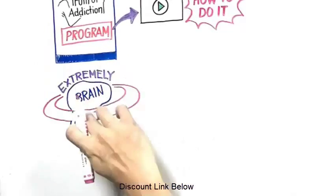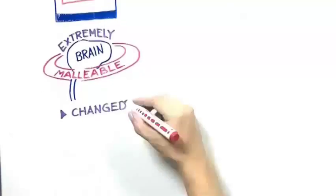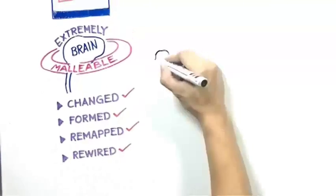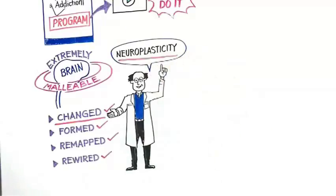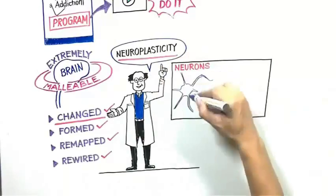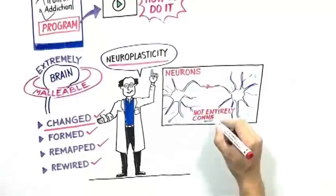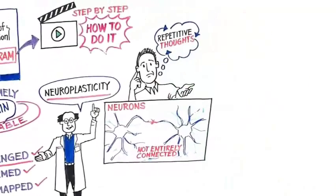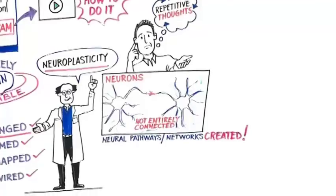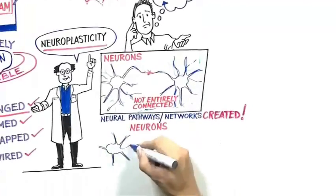You see, the brain is extremely malleable. It can be changed, formed, remapped, and rewired. Scientists call the brain's ability to change as neuroplasticity. Neurons, which are cells in the brain, are not entirely connected. When we have repetitive thoughts or behaviors, neural pathways or networks are created. These pathways are created by neurons firing or sending a signal to each other.